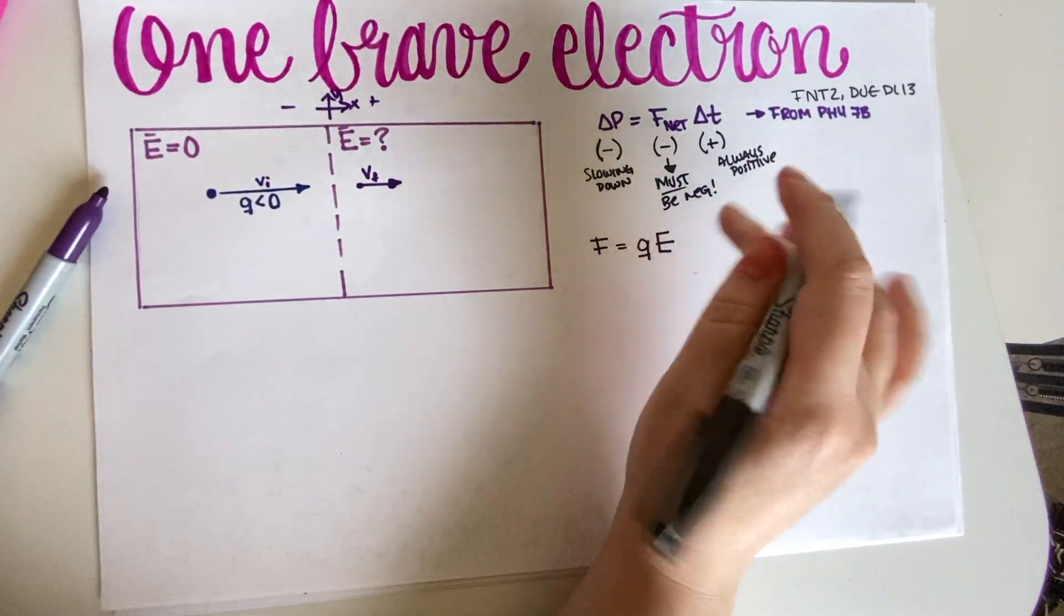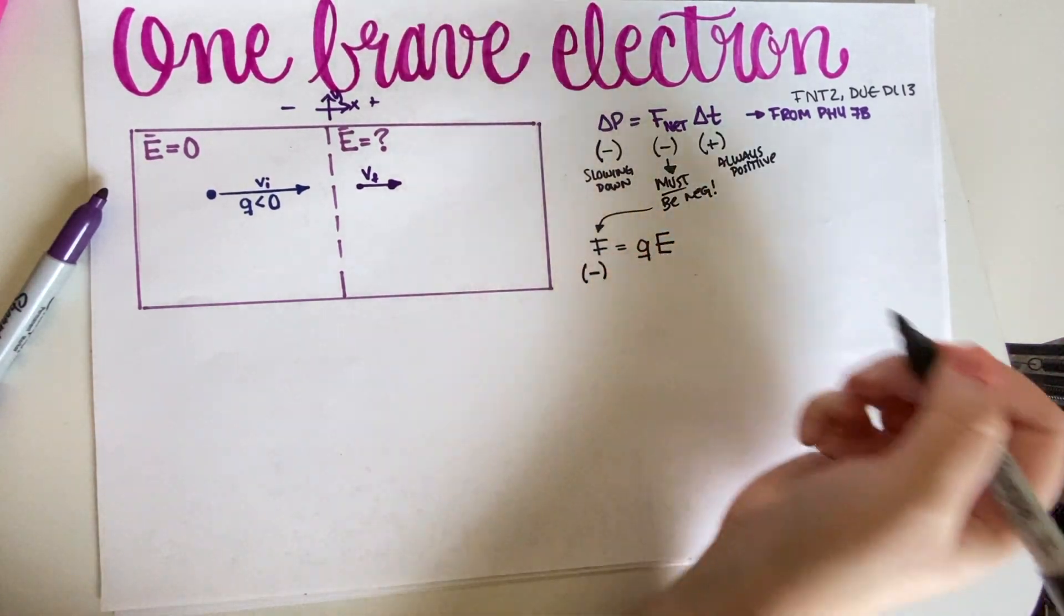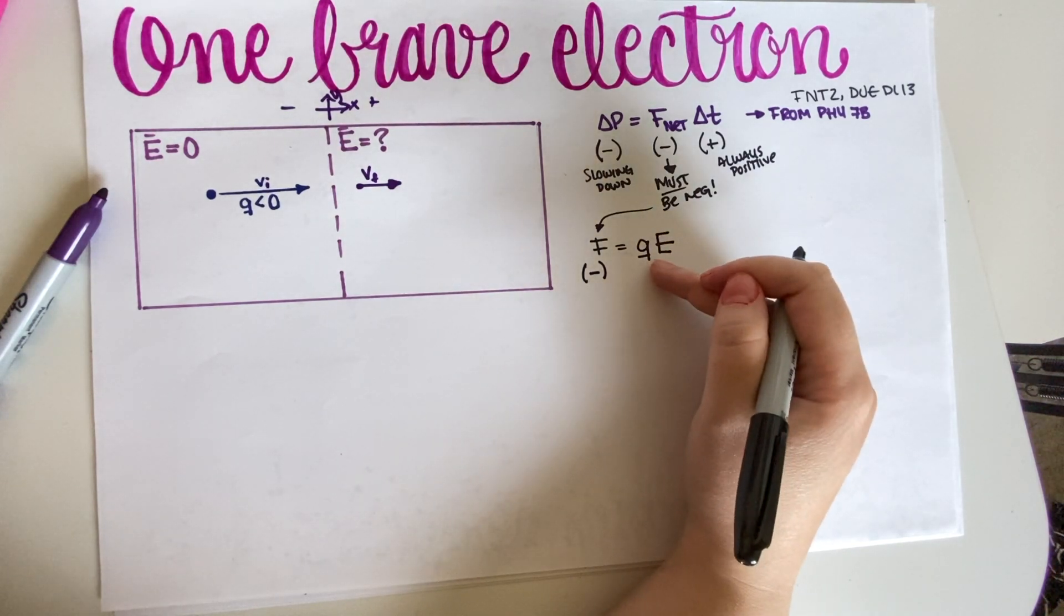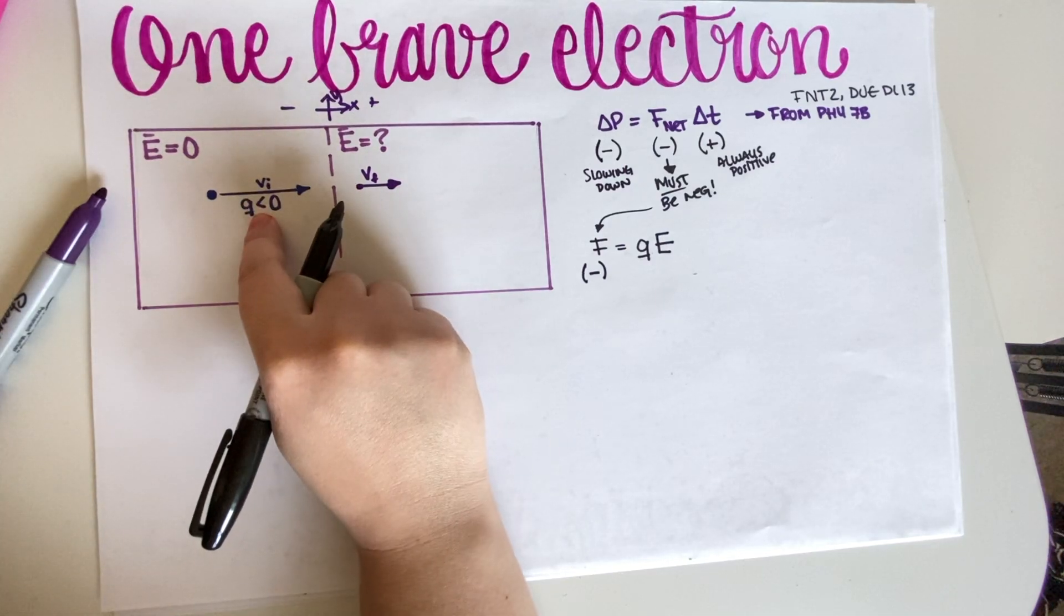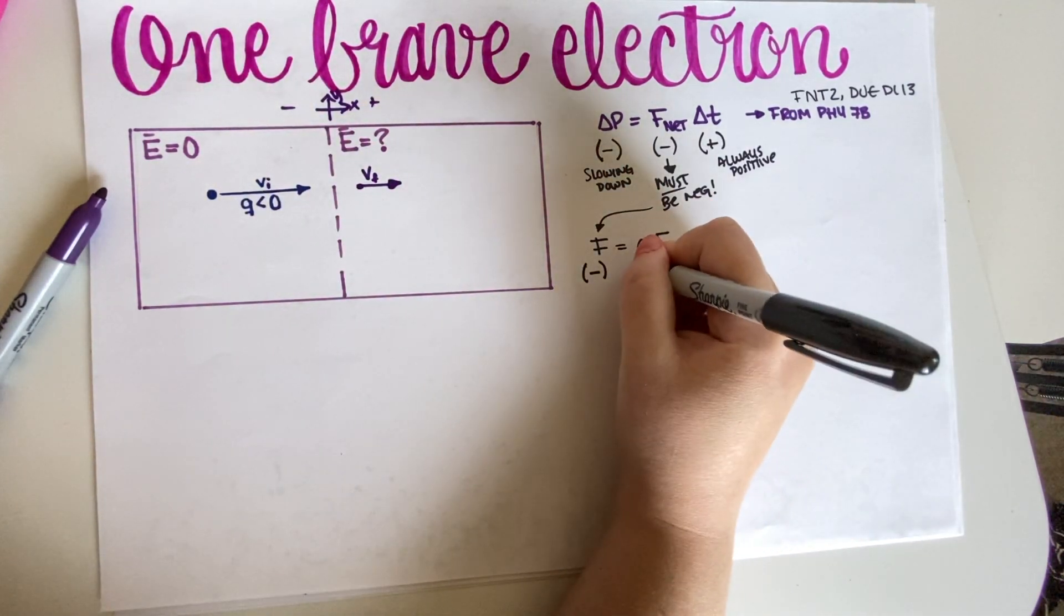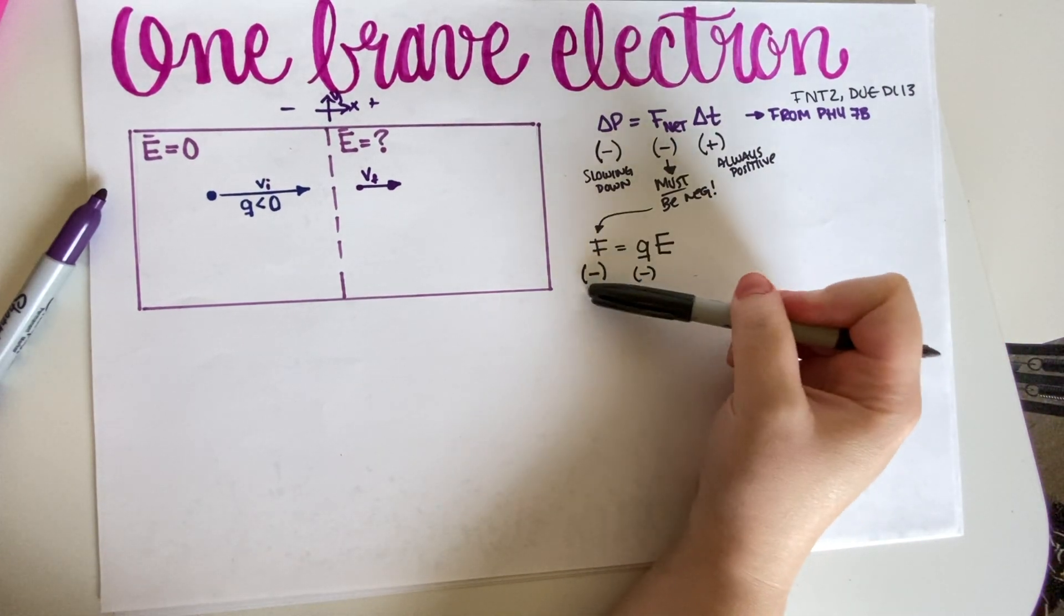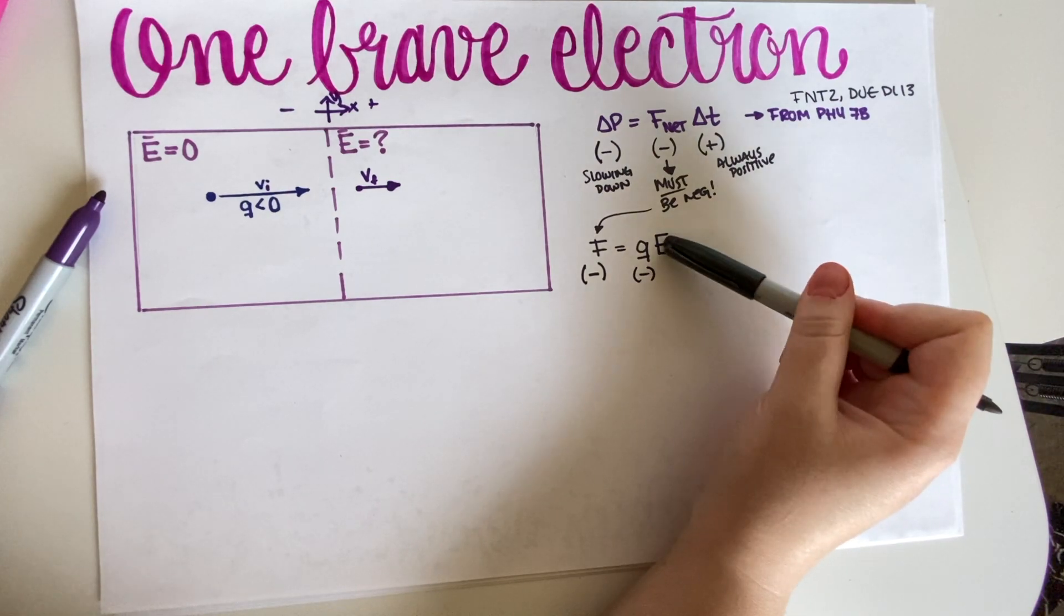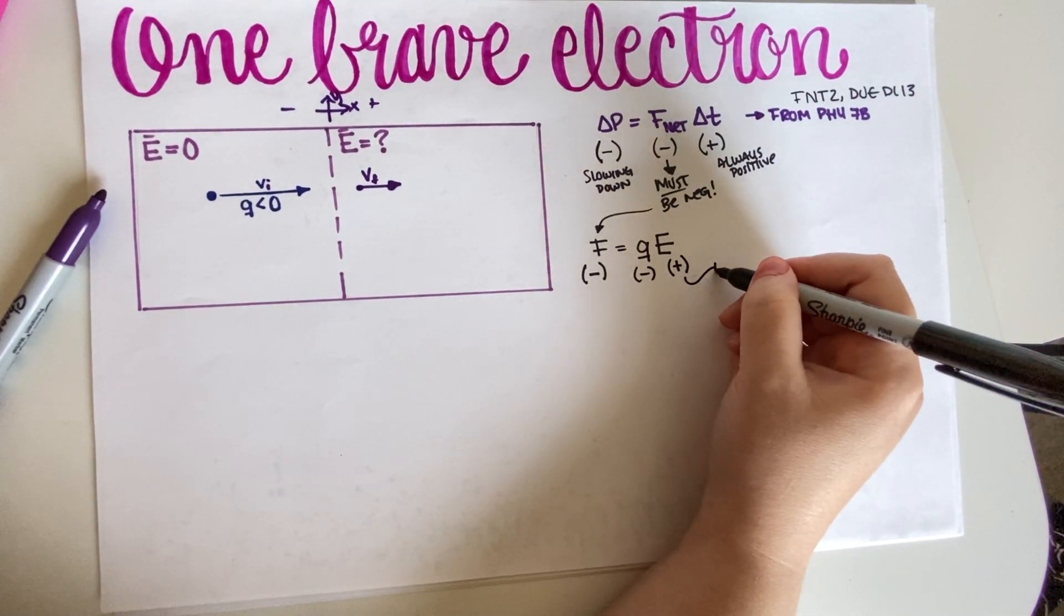Now, the force must be negative, so this number must be negative, and this number over here, this little Q, is also negative because it's a negatively charged particle. So if we want this number on the left side to stay negative, and this is negative, then what we need over here is positive.